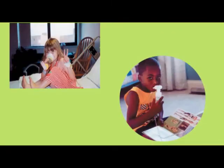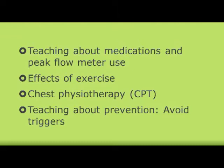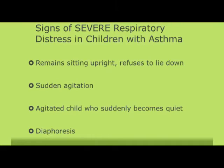Asthma interventions include teaching parents and children about medications, using the peak flow meter, the effects of exercise on asthma, chest physiotherapy, and personal triggers and how to reduce them in the environment. If you see a child that remains sitting up and refuses to lie down, has sudden agitation or becomes very quiet and sweaty, this could be a sign of severe respiratory distress in a child with asthma and immediate attention is needed.